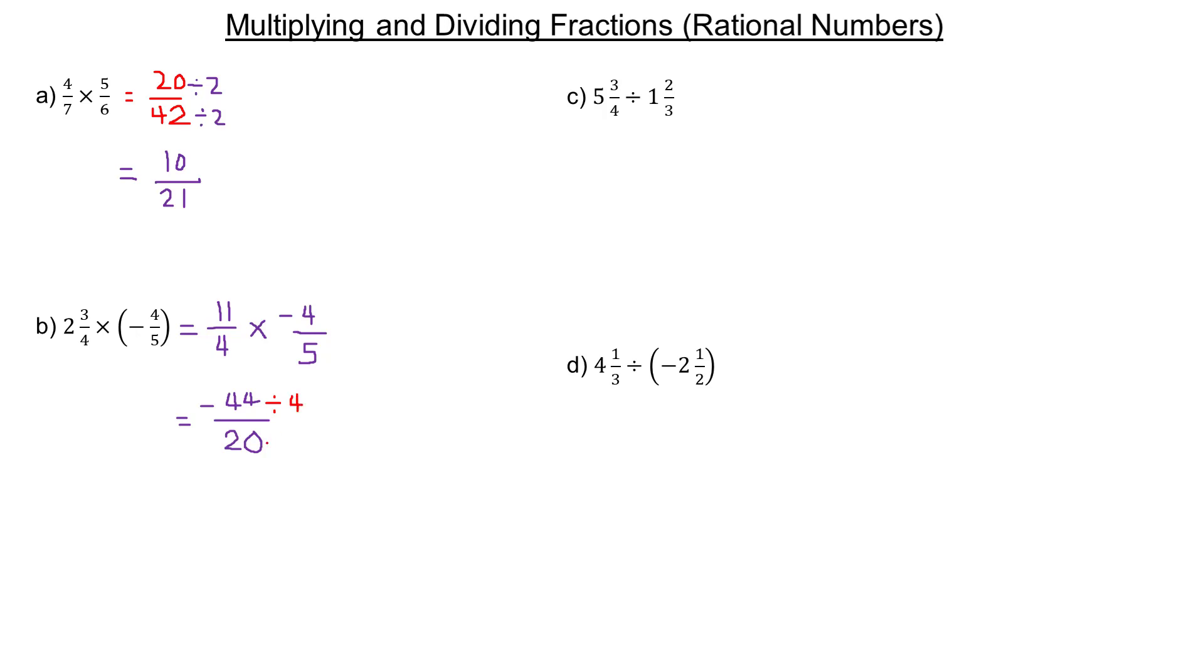We can divide top and bottom both by 4, not just 2. That will reduce it as low as possible. -44 divided by 4 is -11, and 20 divided by 4 is 5, giving us -11/5.